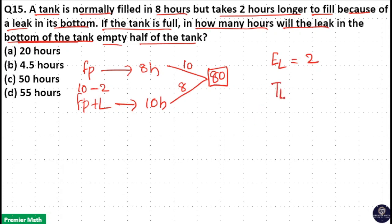So time taken by this leak to empty half of the tank means work is half of 80. Because full tank is 80, half tank means half into 80, 40 liter. Now time taken by this leak to empty this 40 liter is 40 liter divided by efficiency of the leak is 2. Now 40 by 2 is 20 hours.